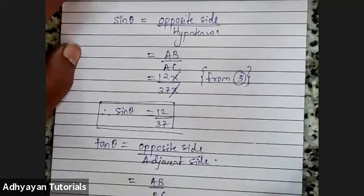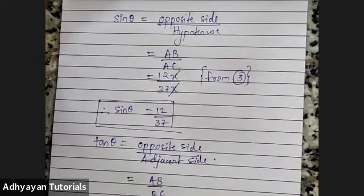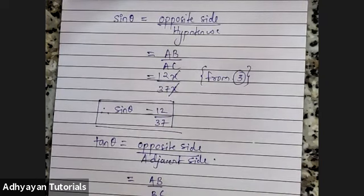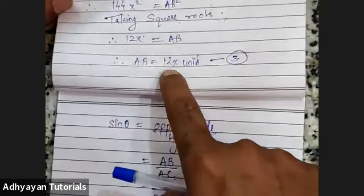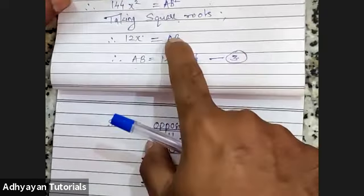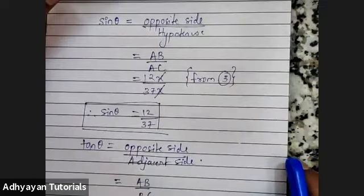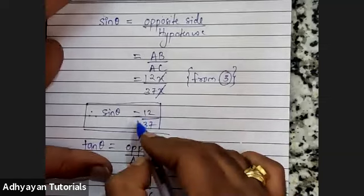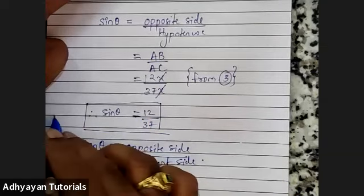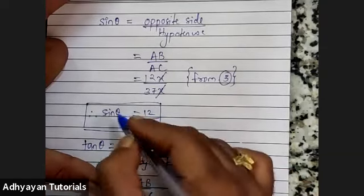Just copy this part. I believe everybody has finished Pythagoras. It cannot be minus 12 here — it cannot be minus 12 because it is a distance; it has to be positive.